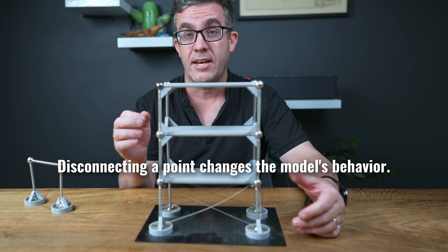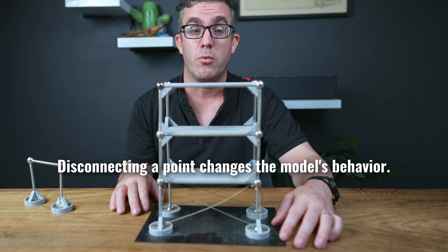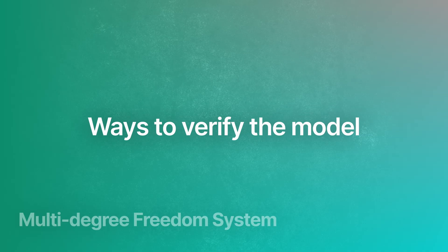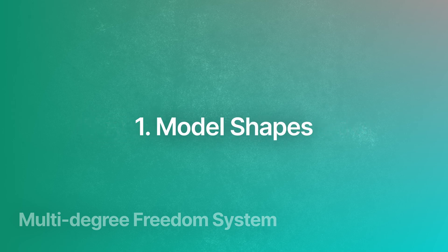Because the forces should be roughly of the same magnitude. What you can easily do is disconnect one of the points. That means the model will behave differently.